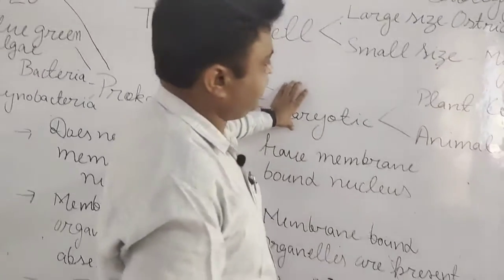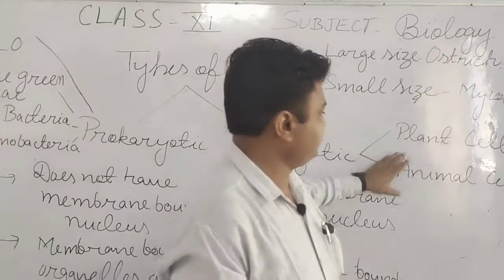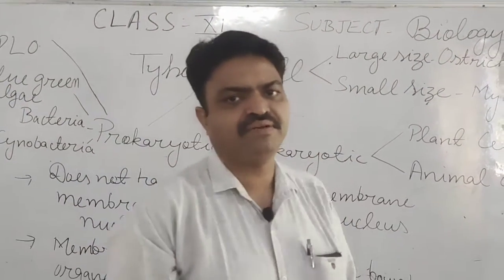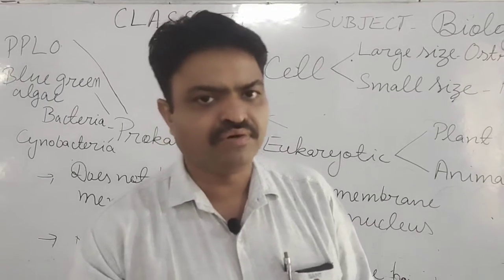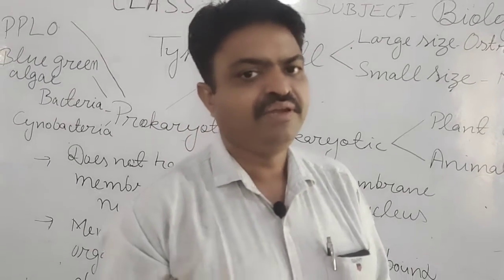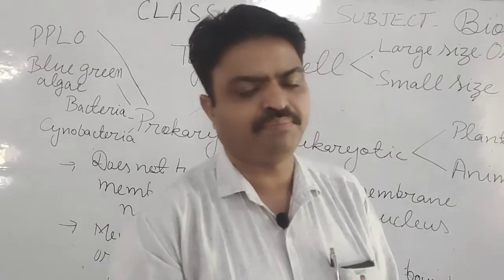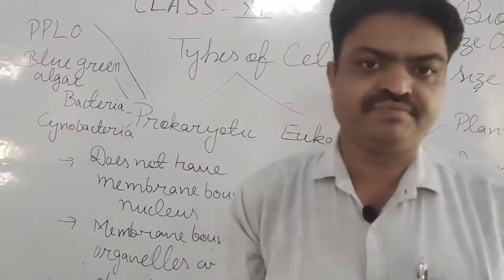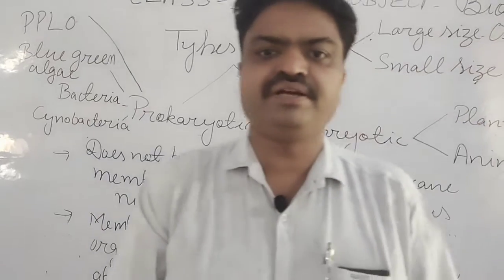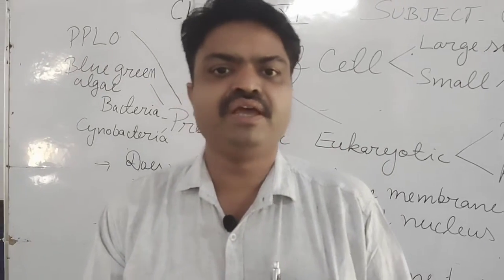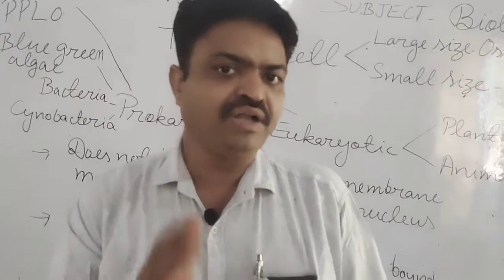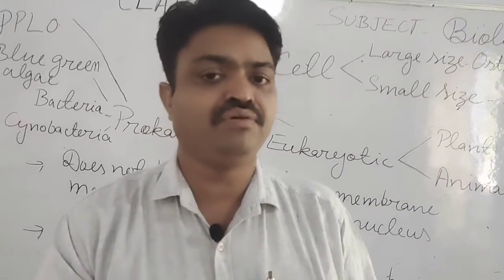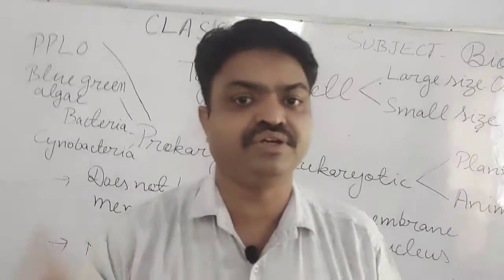Eukaryotic examples are plant cells and animal cells. These living organisms — plants and animals — are known as eukaryotes. The living organisms that have prokaryotic cells are known as prokaryotes. After this, we will discuss about the structure of the prokaryotic cell.